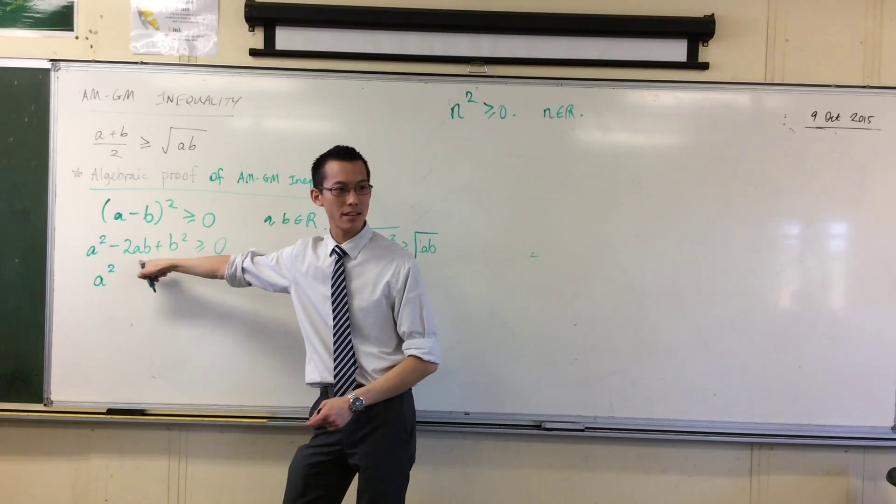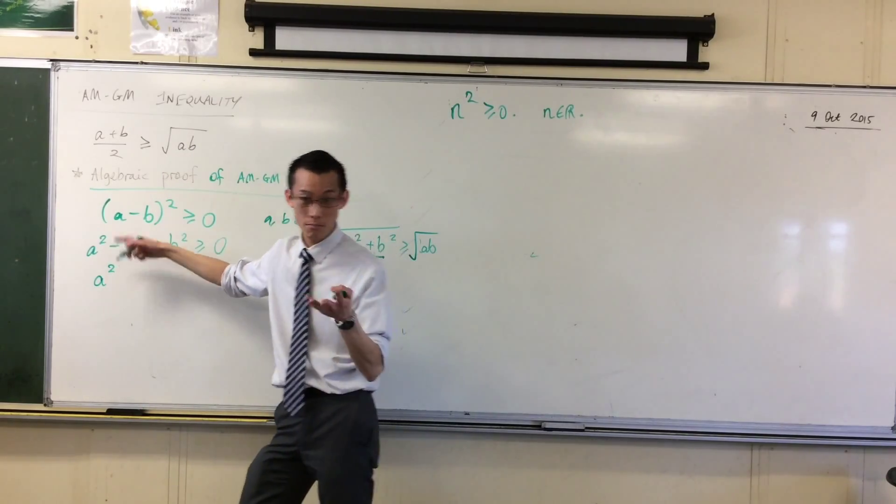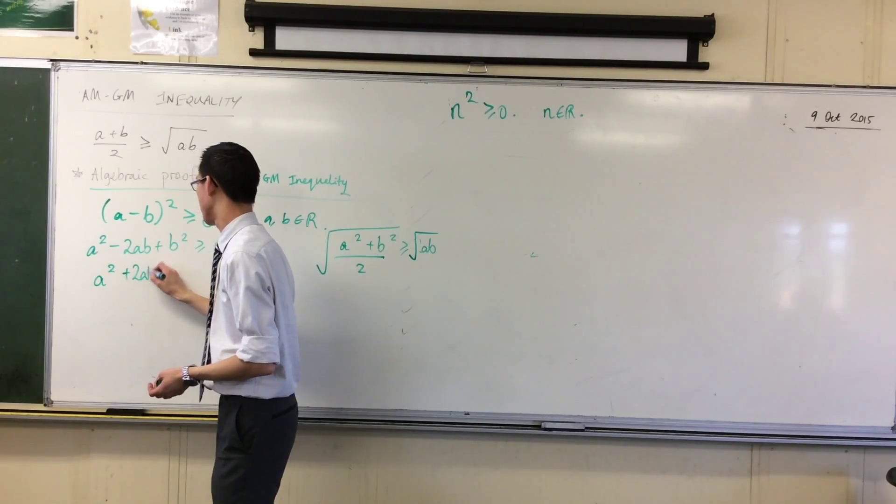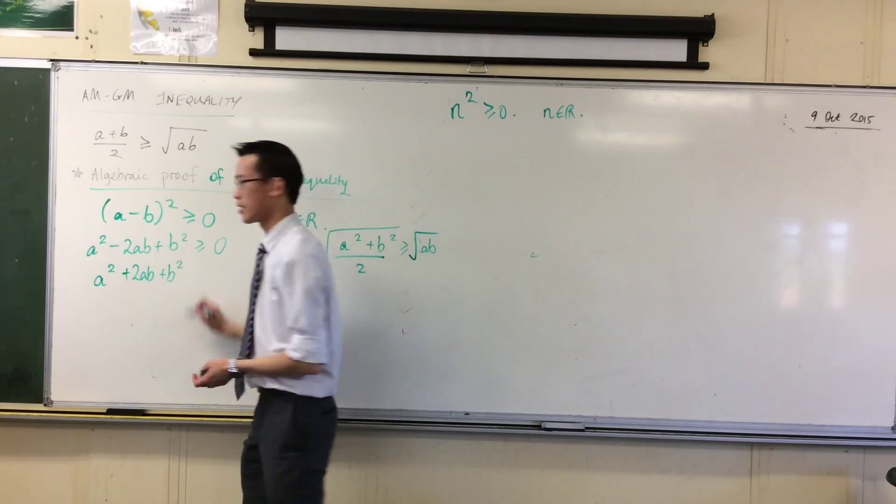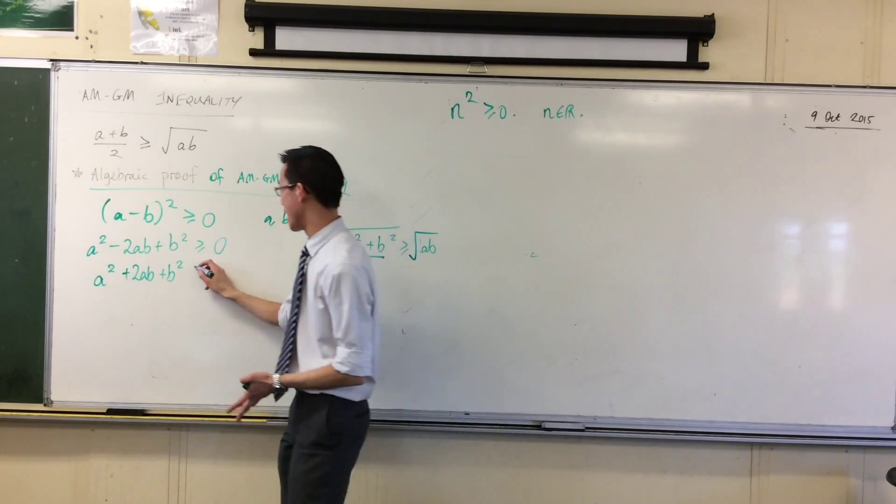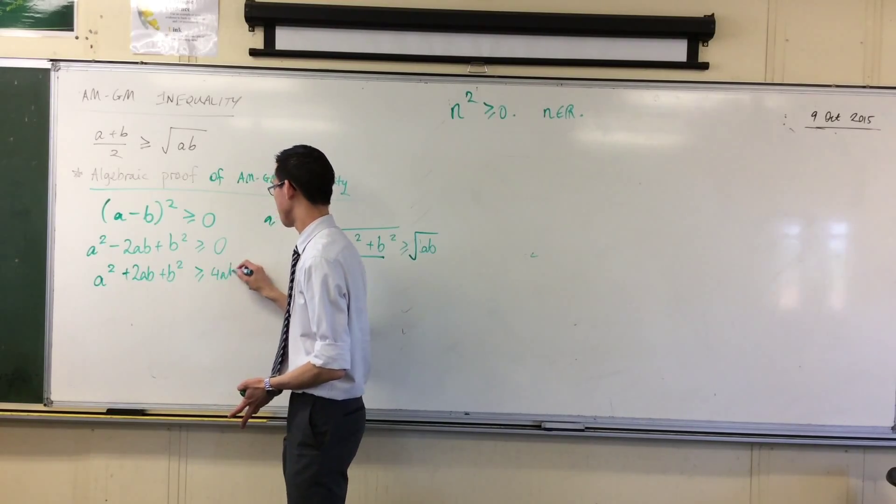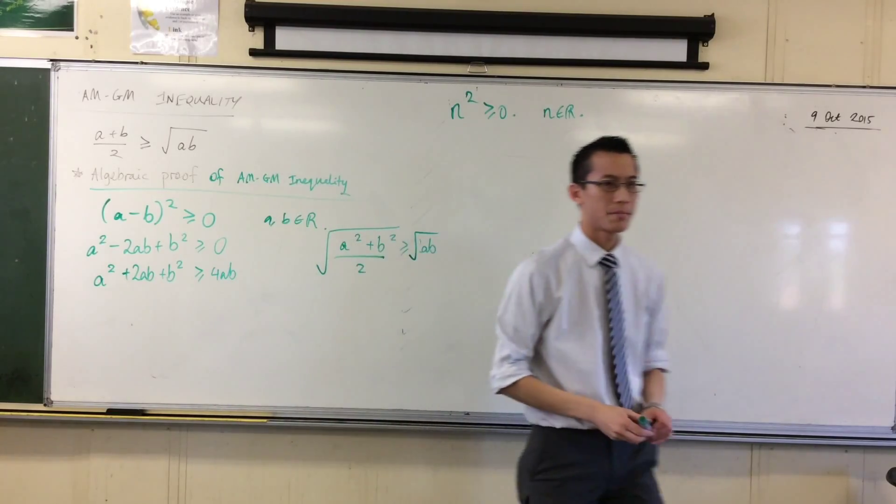When I add 4AB to this, it'll become not minus, but plus 2AB. Okay, now, if I've added 4AB there, I'll add it over the other side. All happy times, okay?